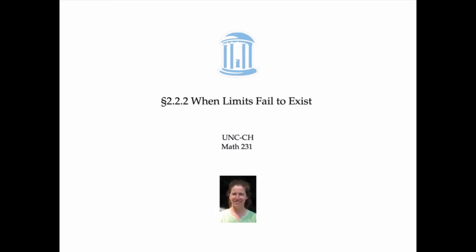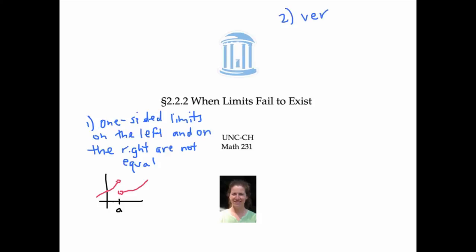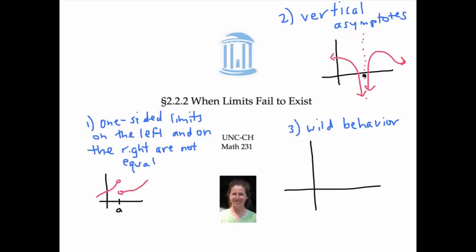In this video, we saw three types of examples when limits fail to exist. They can fail to exist because the one-sided limits on the left and the right are not equal. Or they can fail to exist because of vertical asymptotes. Also, limits can fail to exist when there's wild behavior and the function fails to settle down at any single value.